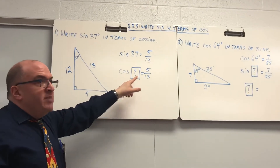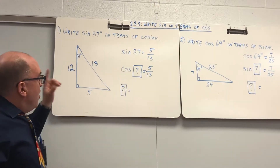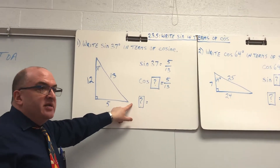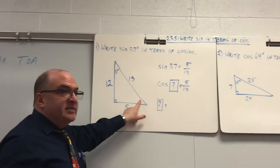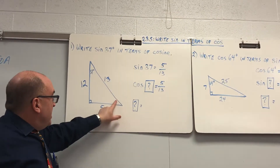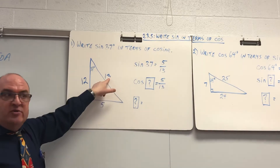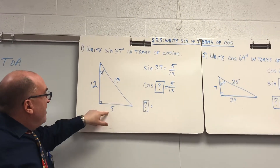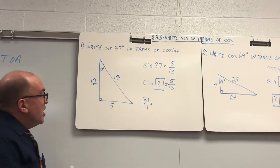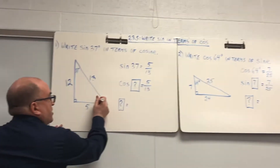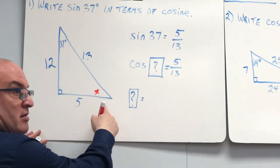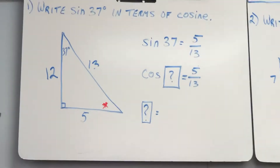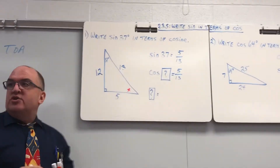So, cosine of what would make 5 over 13? Does it make sense that cosine would have to be right here? Because cosine of whatever this angle is would be adjacent over hypotenuse. Sine of 5 over 13 would be the same as the cosine of this angle. Cosine of this angle is adjacent 5 over 13.